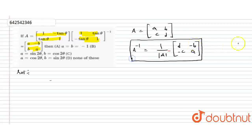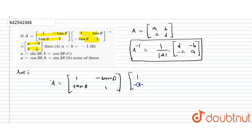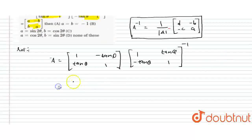This is the short trick I use. So let's move to the solution. First, let's write the given matrix: 1, tan theta, minus tan theta, and 1. And here we have to write the inverse matrix. So let's rewrite the inverse — the matrix remains as it is with minus tan theta and 1.